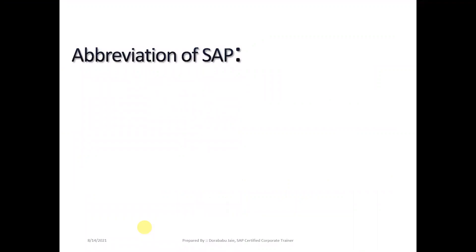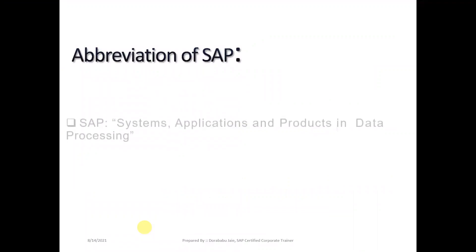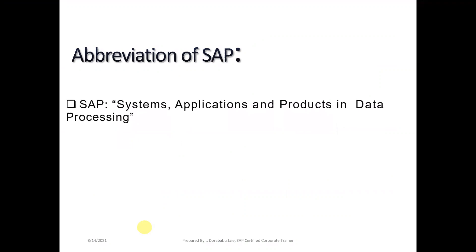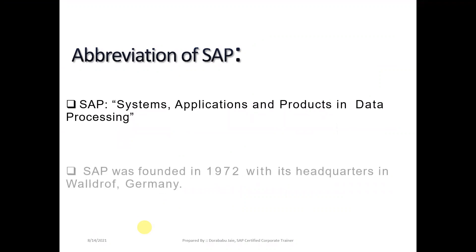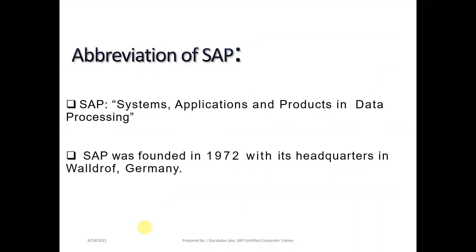The first thing is the abbreviation of SAP. SAP stands for Systems, Applications, and Products in Data Processing. SAP came into the market in the year 1972, and its headquarters is in Walldorf, which is a place in Germany. It is purely an ERP application.